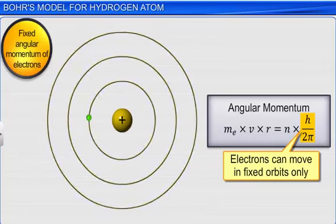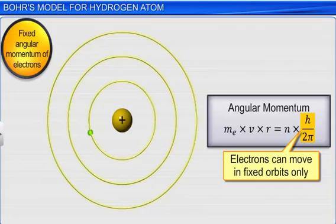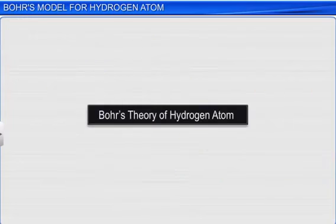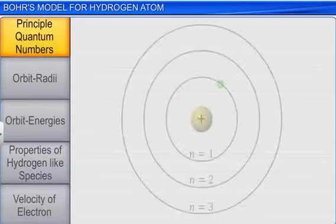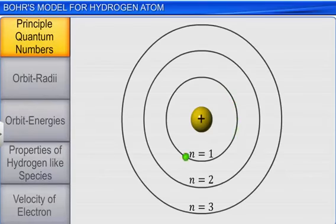Let us now get into more details of Bohr's theory of hydrogen atom. According to Bohr's theory, the stationary states for electron are numbered n equals 1, 2, 3 and so on. These integral numbers are called principal quantum numbers.